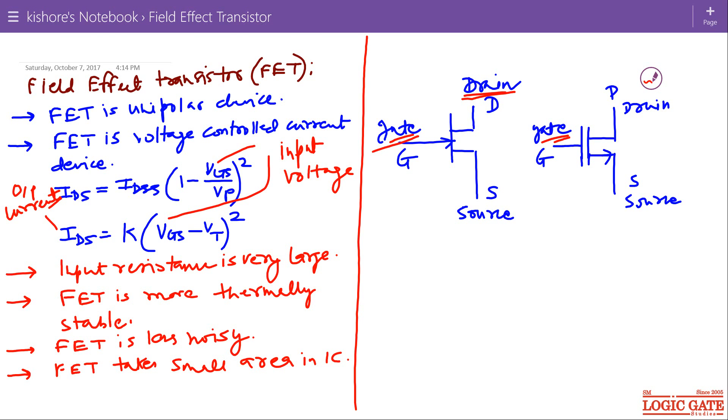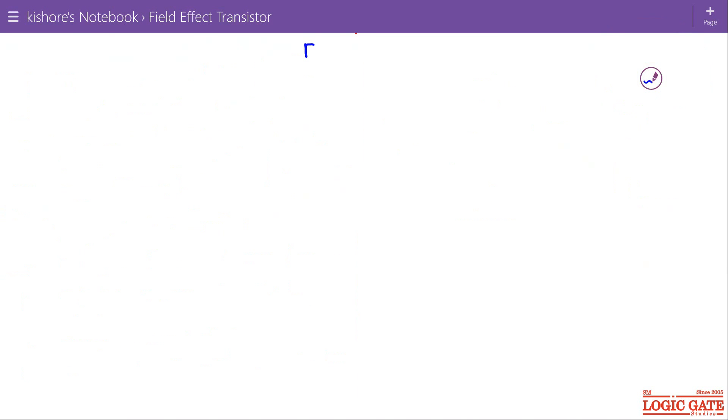Now let us see the types of FET. We have two types of FET. First is called JFET, junction field effect transistor. And second is MOSFET or IGFET, insulated gate field effect transistor. MOSFET is metal oxide semiconductor field effect transistor.